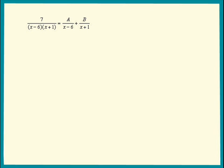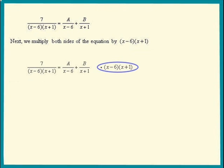What we want to do is find the constants a and b. To do this, we always clear the fractions. So multiply both sides of the equation by x minus 6 times x plus 1. Now we have this simple looking equation to solve for a and b.